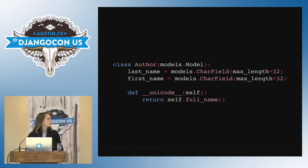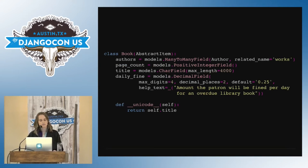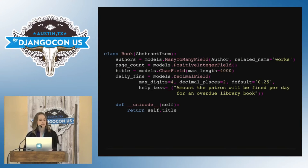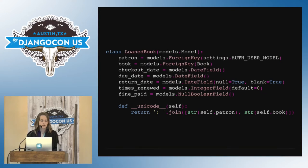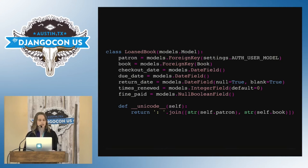Everything else is basically just default user fields. We have an author model, which is incredibly simple — just the first name and last name of the author. We have a book model, which has a many-to-many relationship with authors because a book can have many authors and an author can have many books. We also keep ancillary information useful to a library, like the title and how much we'd charge you per day if you returned your book late. Finally, we have the actual through model. When you have a loaned book, you have a relationship between the patron, the book itself, when it's due, whether fines have been paid, how many times it's been renewed, and things like that.